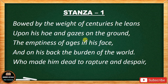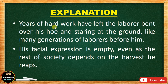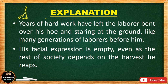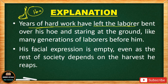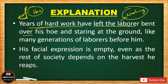Line 1: 'Bowed by the weight of centuries, he leans upon his hoe and gazes on the ground.' This means years of hard work have left the laborer bent over his hoe. A hoe is a tool that a farmer uses in the field to dig the ground. The laborer — meaning the working class — after many years of hard work in the field, has become bent over his hoe, staring at the ground.